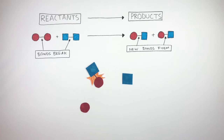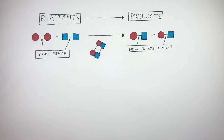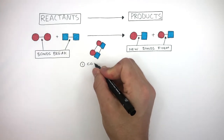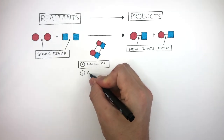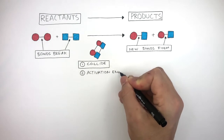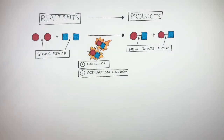So for a successful chemical reaction, the particles must collide and they must have the activation energy, which is the minimum amount of energy required for a reaction to start.